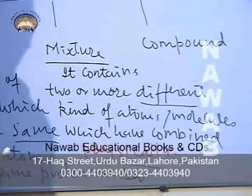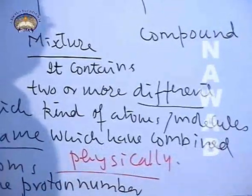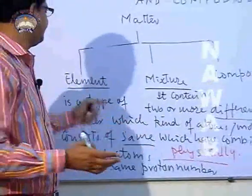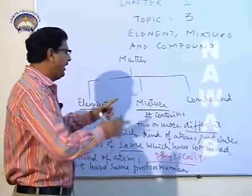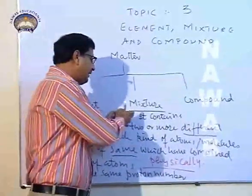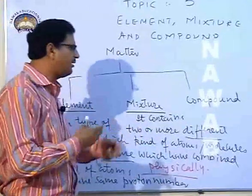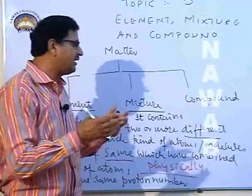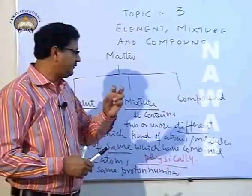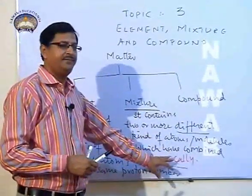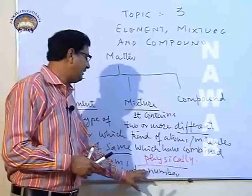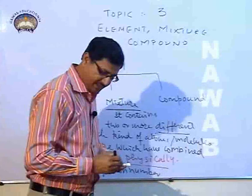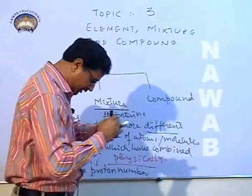So, if the atoms in a substance are of same kind, that matter would be an element. And if it contains two or more than two different kinds of atoms or molecules, but the condition is they must be combined physically, not chemically, then that will be called a mixture.